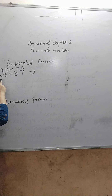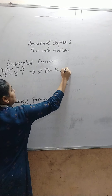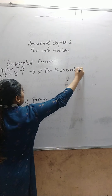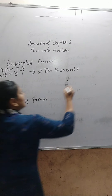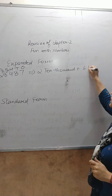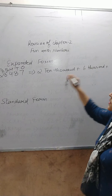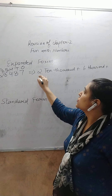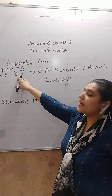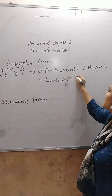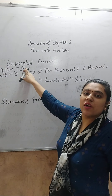2 is on which place value? It is on 10,000. So it becomes 2 × 10,000. Plus 6 is on 1,000 place, so it becomes 6 × 1,000. Plus 4 is on 100's place, so it becomes 4 × 100. Plus 8 is on 10's place, so it becomes 8 × 10. Plus 7 is on 1's place, so it becomes 7 × 1.